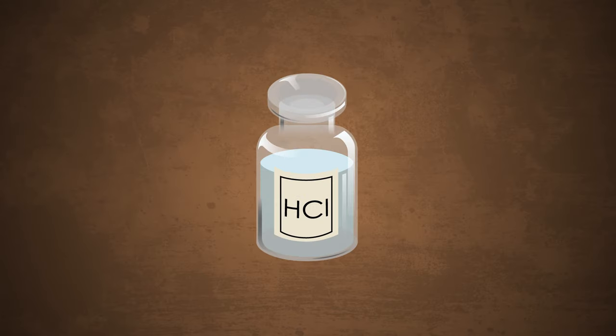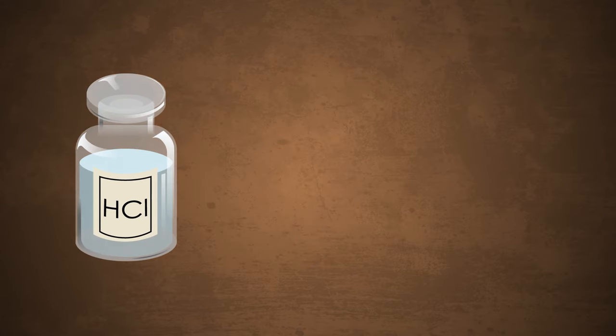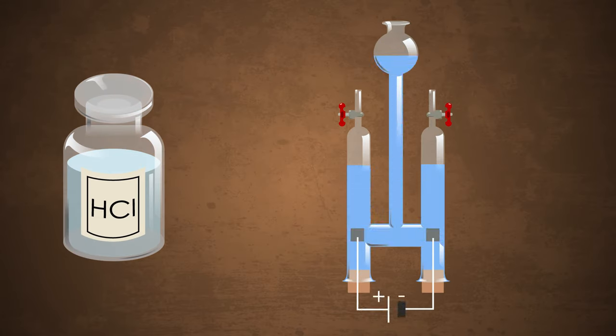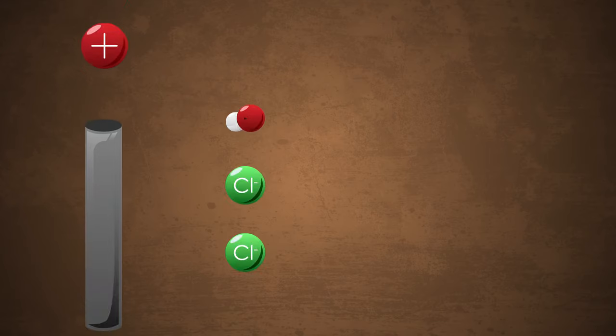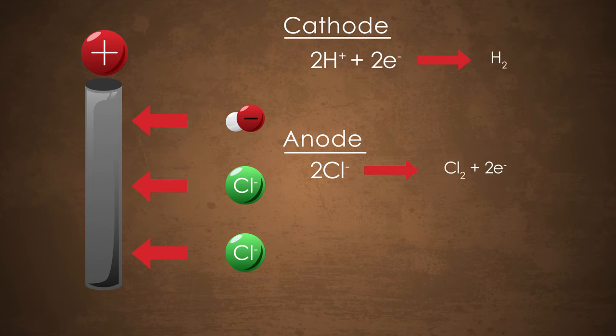If water is acidified with hydrochloric acid, the reaction is altered due to the presence of the chloride ions, Cl negative. In this case, it's the chloride anions that are oxidized and not the hydroxide ions. So chlorine and not oxygen is made at the anode. The combined reaction is again a redox, with the gases each being made in equal amounts.